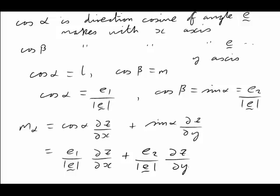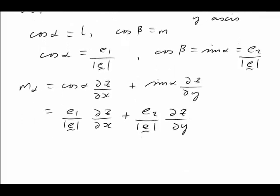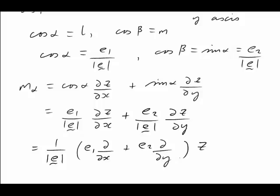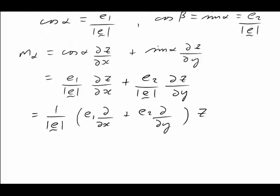Now, does that remind you of something? It could be a dot product, couldn't it? Suppose we took out the factor of 1 over the length, and then we could write that as e1 ∂/∂x acting on z plus e2 ∂/∂y acting on z. Written that way, and remembering our definition of grad, this is exactly 1 over the length of e times the dot product e · ∇ acting on z.